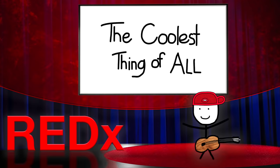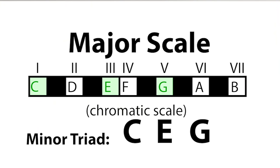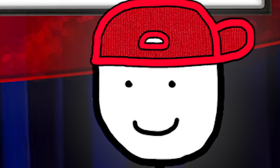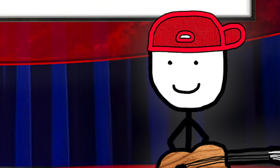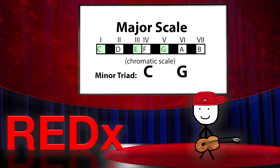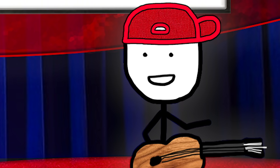Now here's the coolest trick of all. If you want to make a minor triad, you can take any major triad and just make the middle note — the third — flat. It's sad now. Getting a flat tire is sad and so is getting a flat third. But here's what's really interesting: if you remove the middle note, the third, you get a power chord.